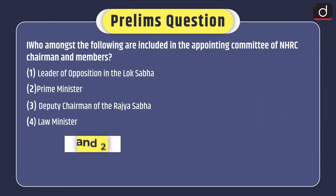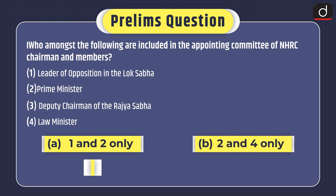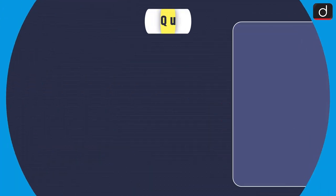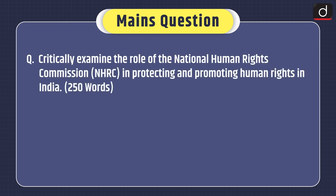Now it's time for practice questions. Note down the prelims-based question: 'Who amongst the following are included in the appointing committee of NHRC chairman and members? 1. Leader of Opposition in the Lok Sabha, 2. Prime Minister, 3. Deputy Chairman of the Rajya Sabha, 4. Law Minister. Choose the correct options: (a) 1 and 2 only, (b) 2 and 4 only, (c) 1, 2 and 3 only, or (d) 1, 2, 3 and 4.' The main question is: 'Critically examine the role of the National Human Rights Commission in protecting and promoting human rights in India.' That's all for today. Stay tuned for the next episode. Thanks for watching.